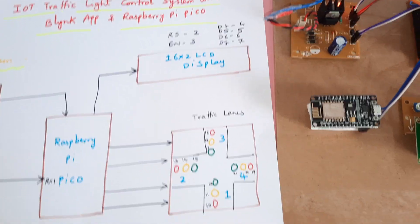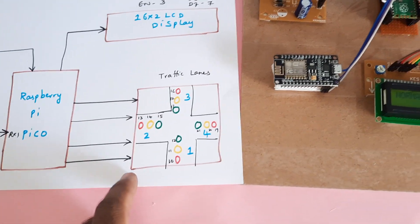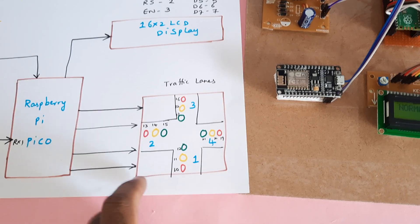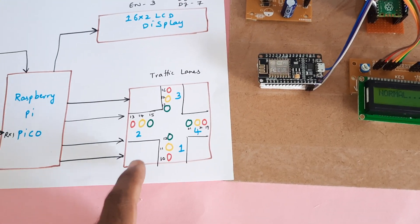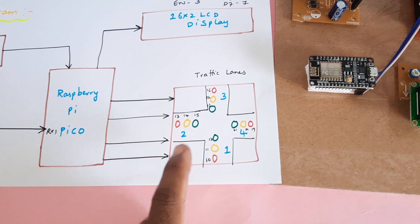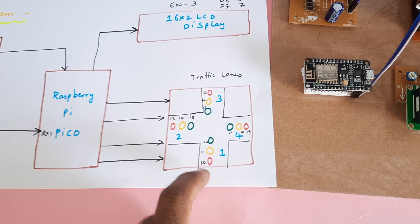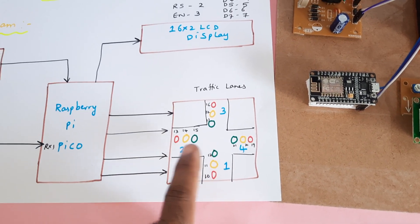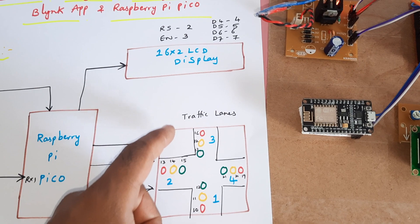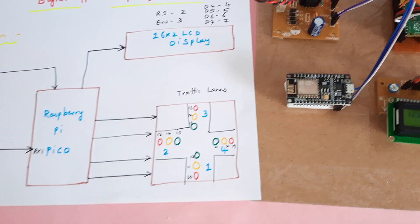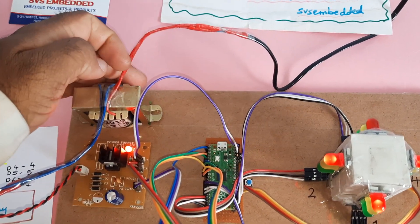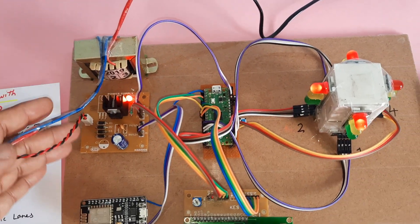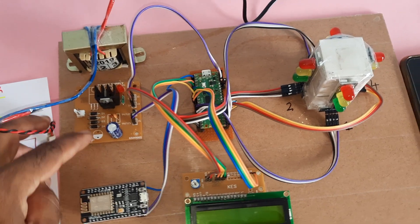We are using a total of 12 LEDs for Lane 1, Lane 2, Lane 3, and Lane 4. Those are connected with the general GPIO (General Purpose Input Output) pins 10, 11, 12, 13, 14, 15, 16, 17, 18, 19, 20, 21. The NodeMCU communication uses a 230V input step-down transformer with a 9V output AC.